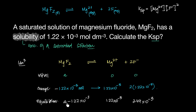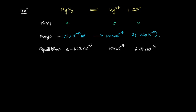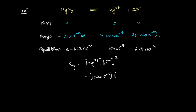You might say we don't know A — that's fine, we don't need it. For KSP, if you look at what we need: the concentration of magnesium and the concentration of fluoride ions, which we already have from the solubility. So the KSP is [Mg²⁺] times [F⁻]², which is 1.22×10⁻³ for magnesium, and 2.44×10⁻³ for fluoride, that whole thing squared. That will give the final answer.